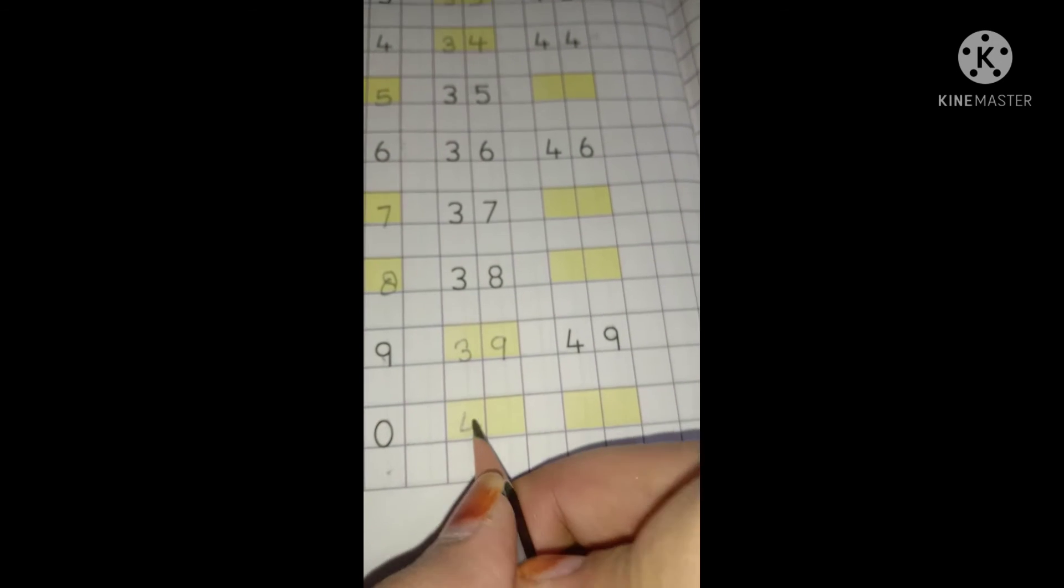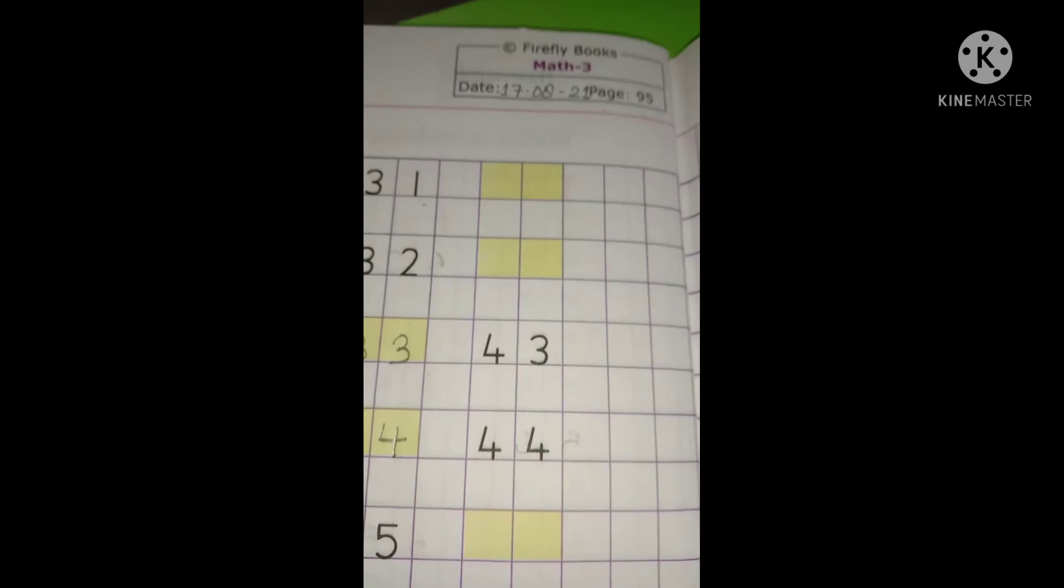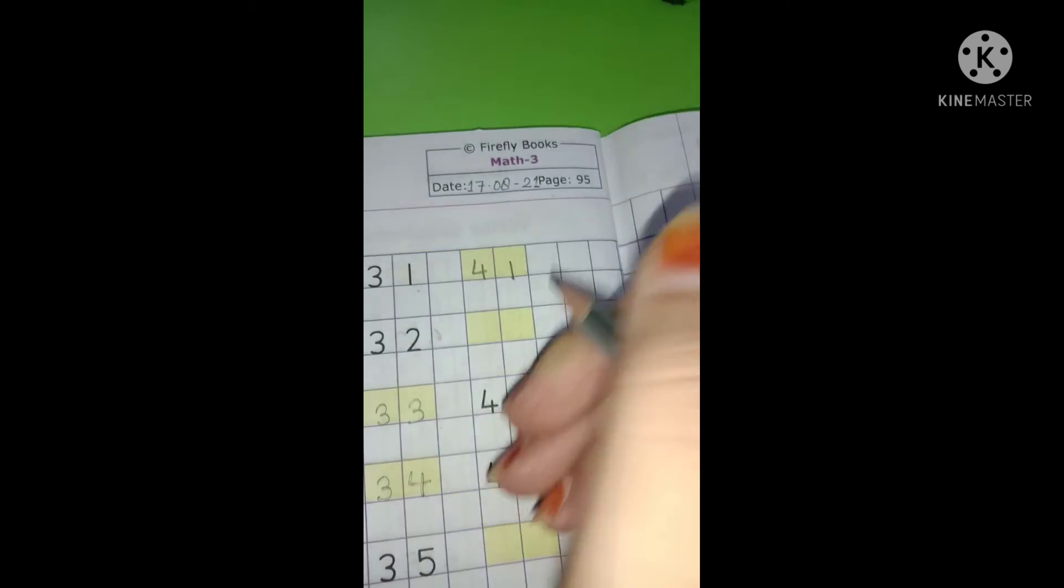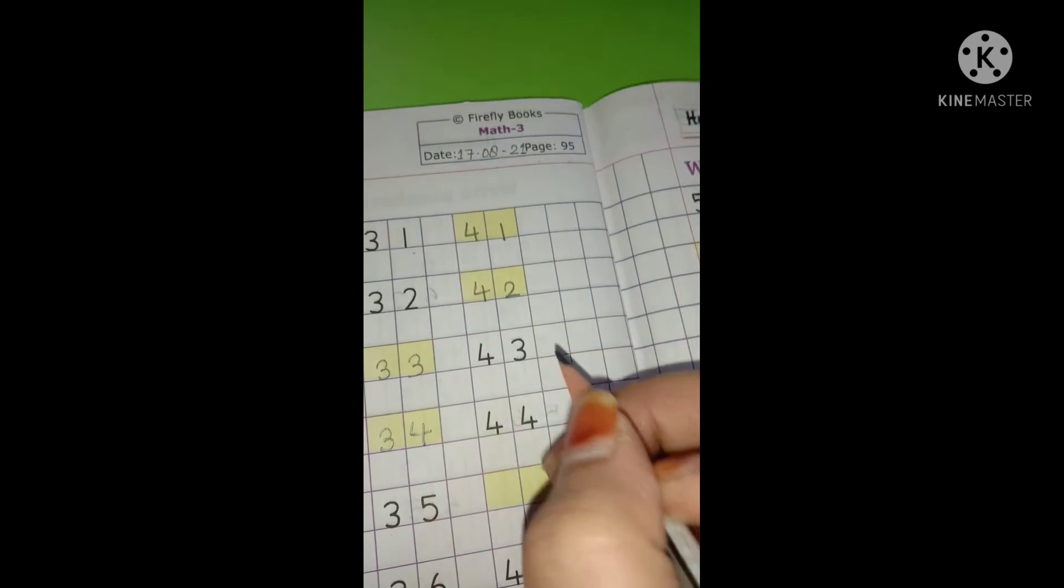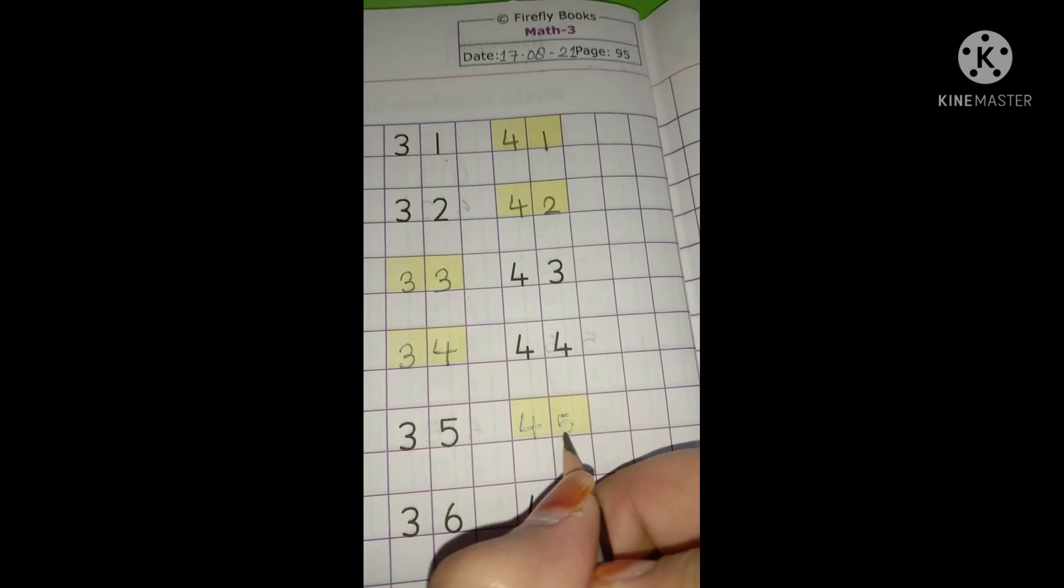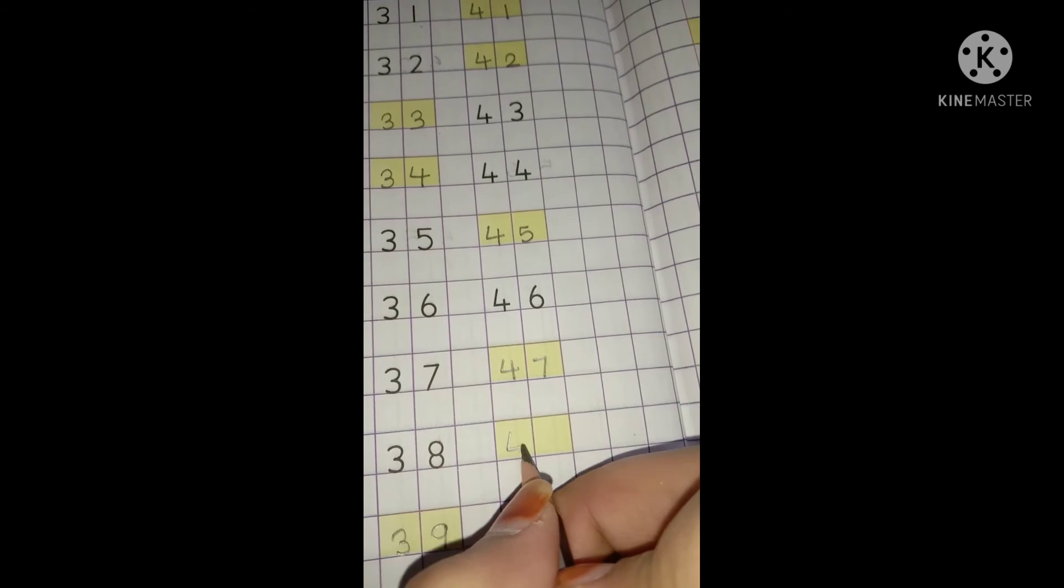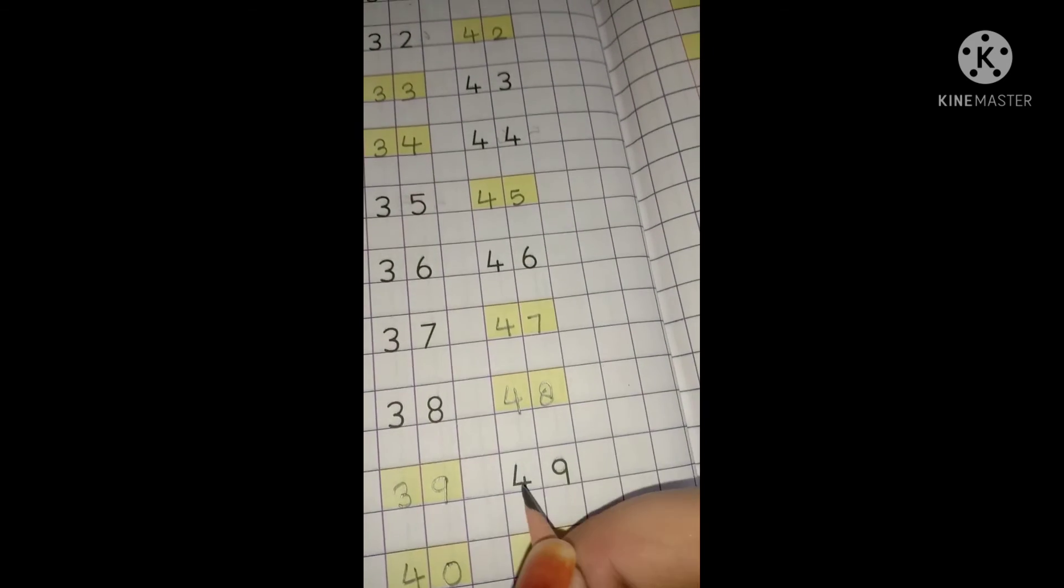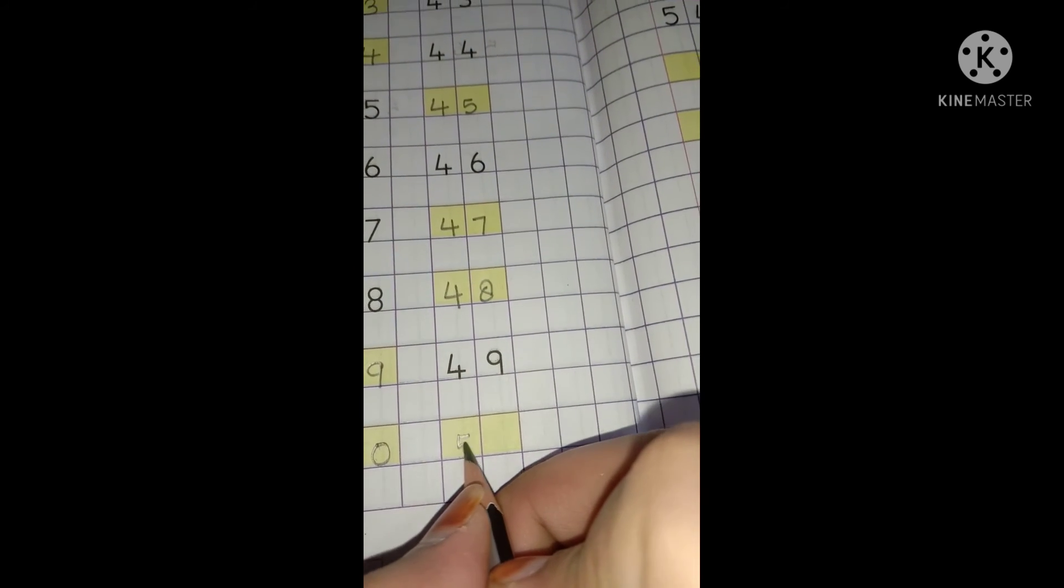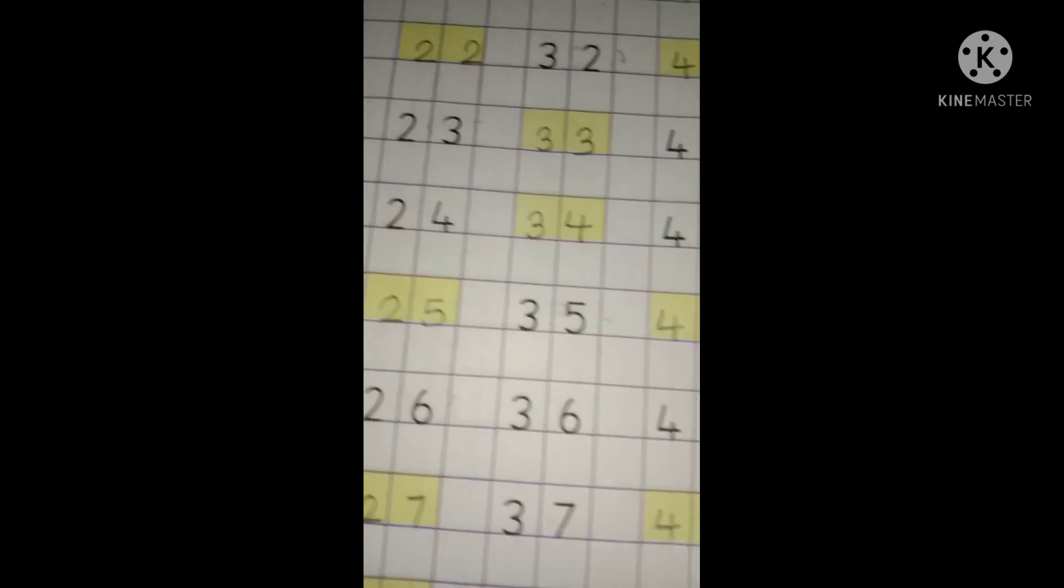And then 40, 41, 42, 43, 44, 45, 46, 47, 48, 49. And what comes after 49? It's number 50. So students, like this you have to do page number 95.